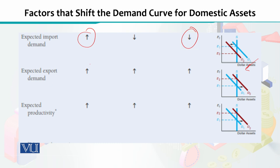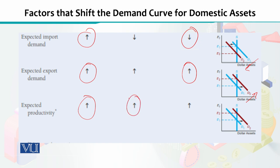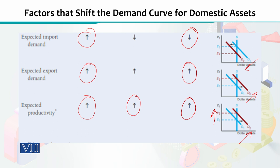If expected export demand is going to increase, that will increase your demand curve and shift it upward. If expected productivity is going to go up, that will also increase expected demand, causing an upward shift in the demand curve and raising the exchange rate. This is how we can see the effect of multiple factors on the exchange rate of a certain currency, and how there would be shifts in the equilibrium as well.